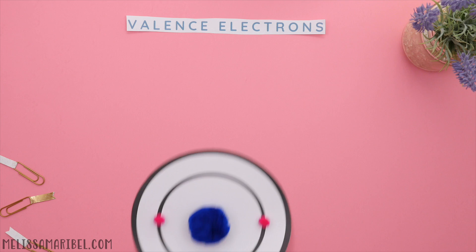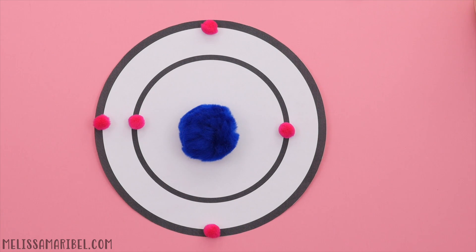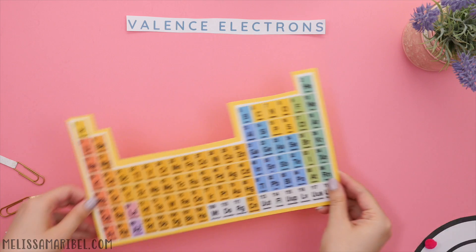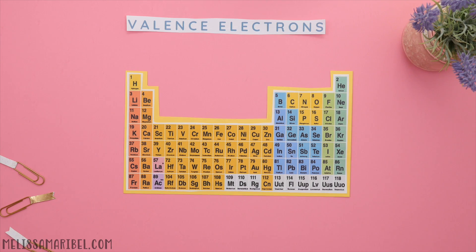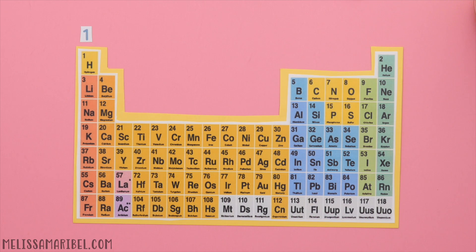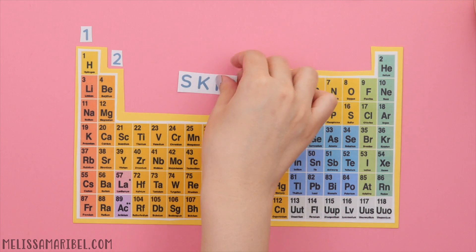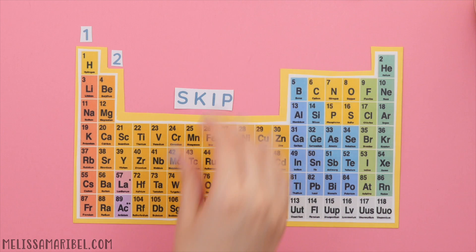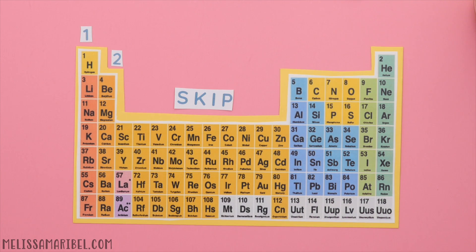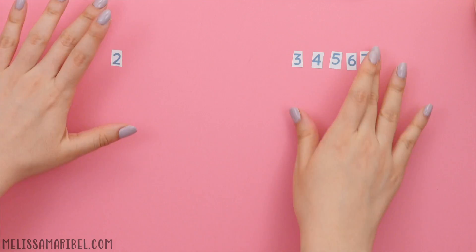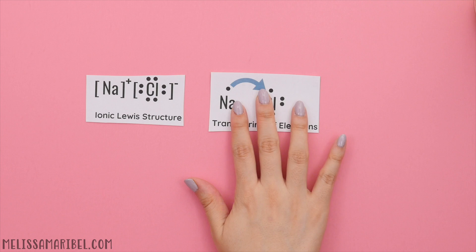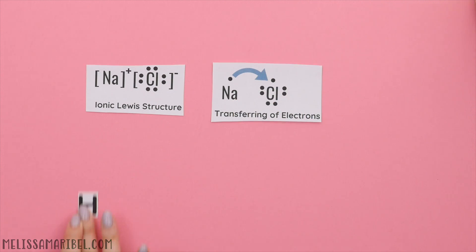Valence electrons are the electrons on the outermost shell of an atom that are either gained or lost during a chemical reaction. These are the valence electrons you will need to have memorized: the first group has one valence electron, the second group has two. We skipped the transition metals since they vary, and now this group has three, four, five, six, seven, and the noble gases have eight valence electrons.